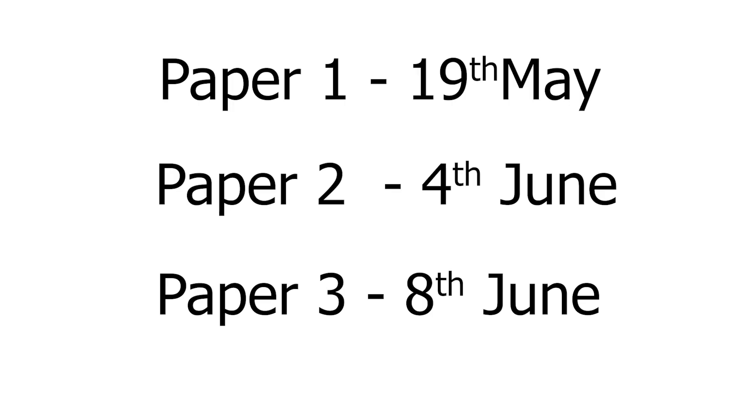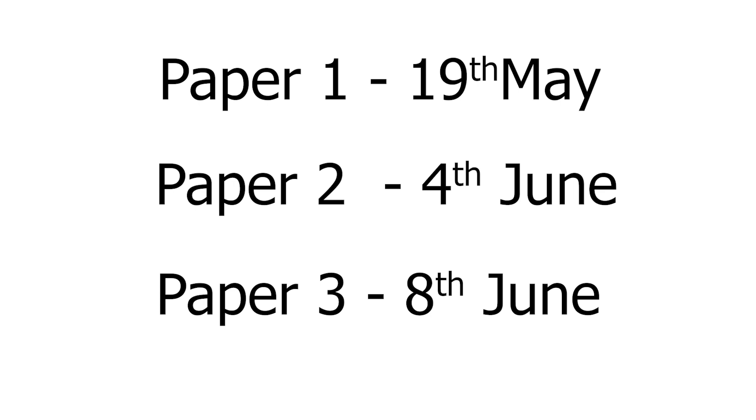Finally, the exam dates — these are for 2020, so if you're watching in future years, check with your school. Regardless of exam board or tier, you'll sit three exams of an hour and a half each. For Edexcel and AQA, the first paper is the non-calculator paper; for OCR, it's the second paper that's non-calculator. The first exam is Tuesday the 19th of May, then a two-week break until Thursday the 4th of June, and the final exam is Tuesday the 8th of June. Results day is August the 20th.